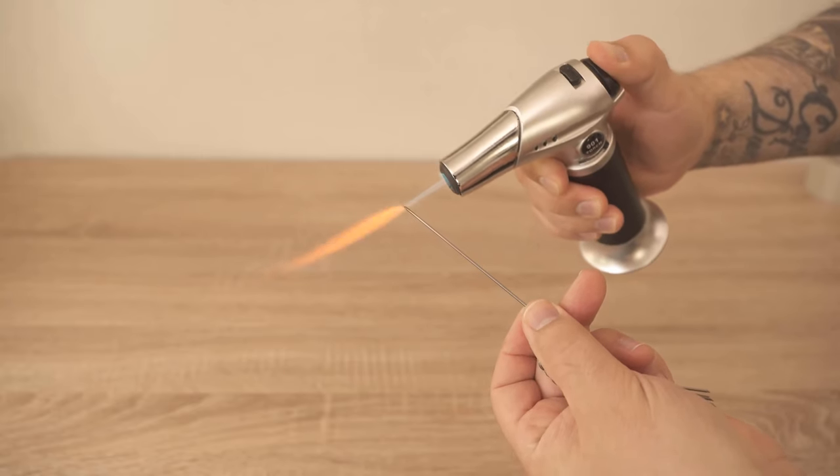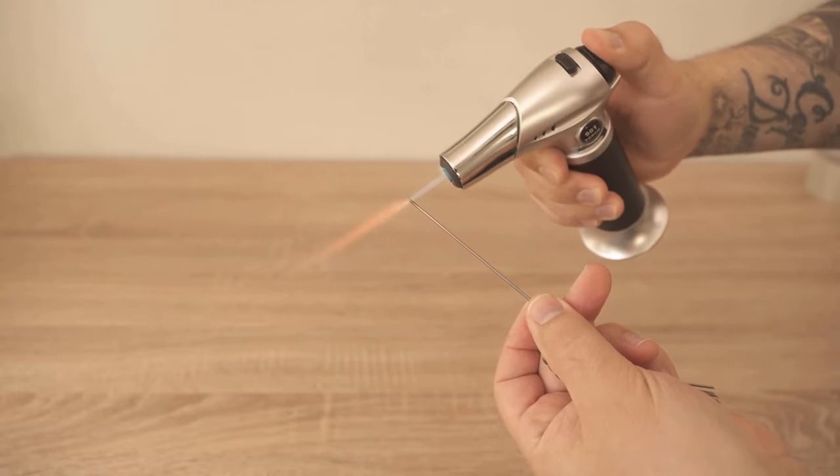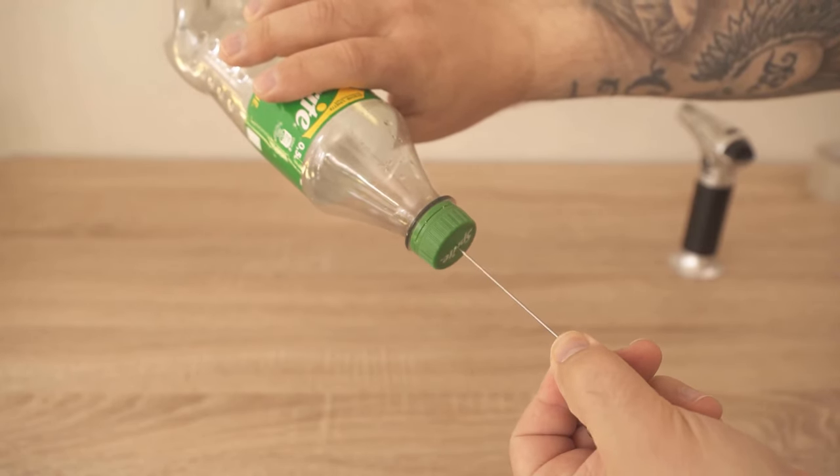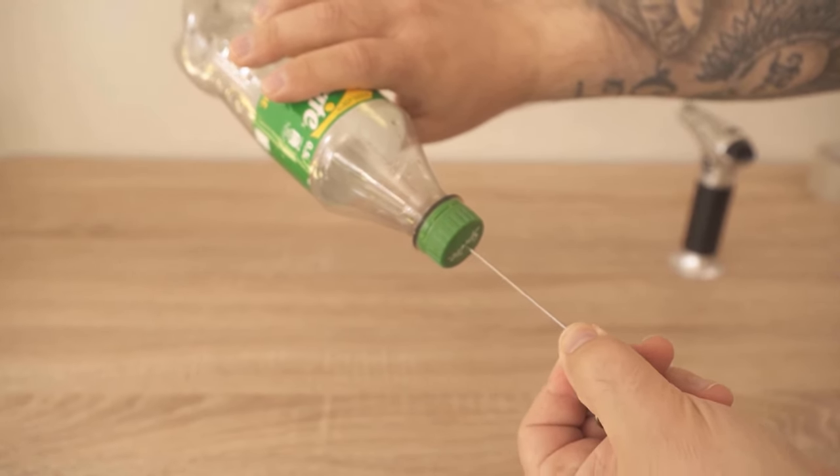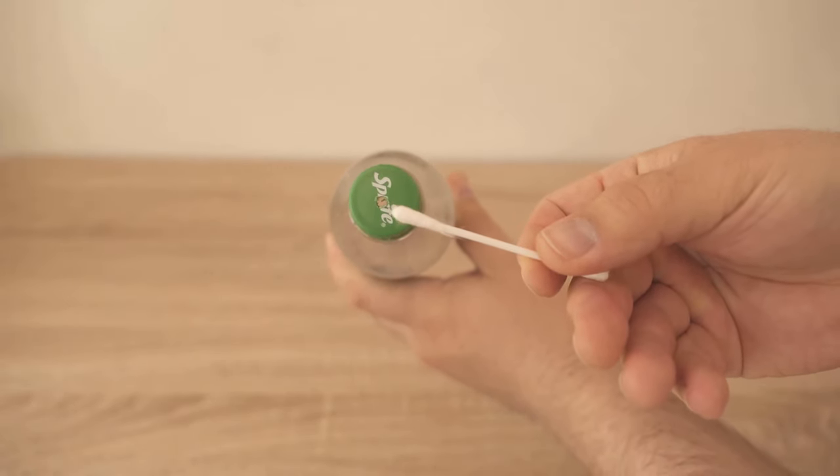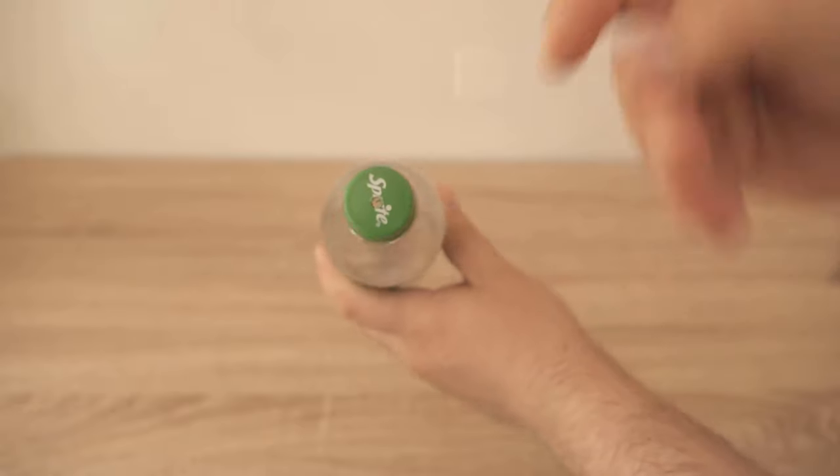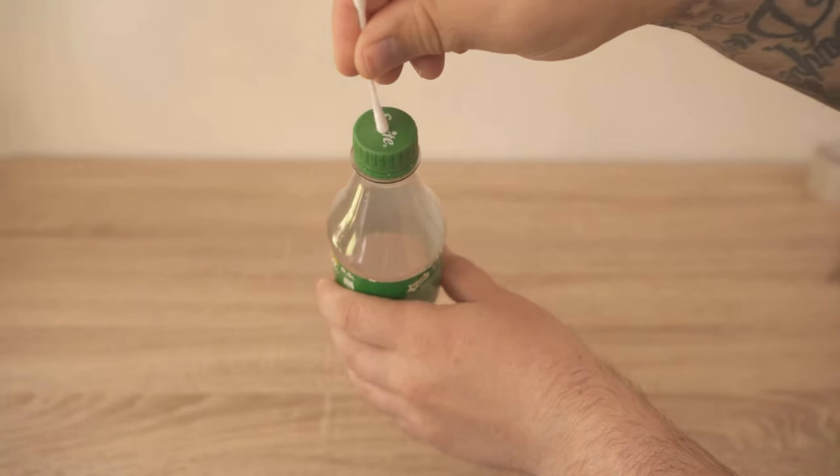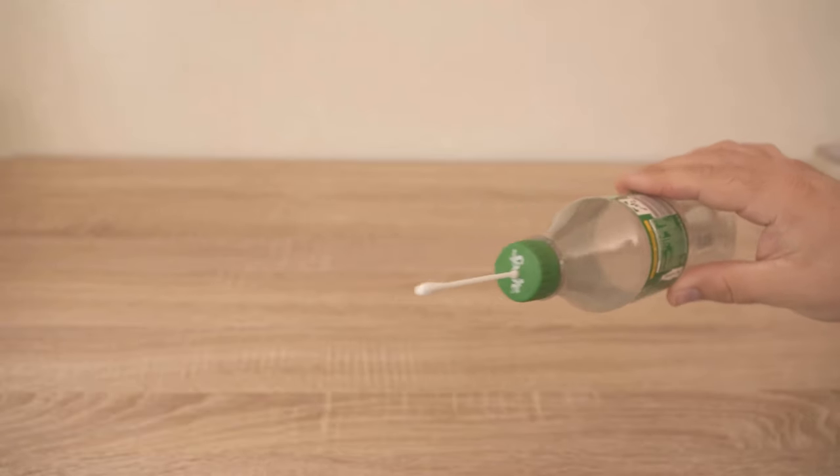All you need is a small PET bottle and something to pierce the lid with. I'm going to use a needle and I'm going to heat it up a little bit, because it should be the right size so that we can just get a cotton swab through here. So the hole shouldn't be so big that the entire cotton swab falls right in, but just so that we can stick it through the hole and it will stay stuck in here.